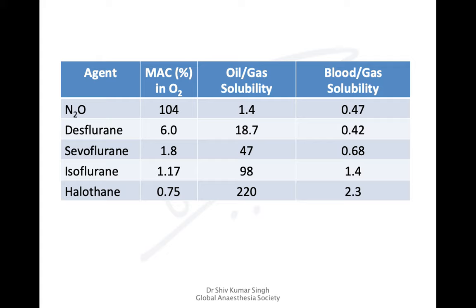For nitrous oxide, the oil-gas solubility is 1.4. It is less soluble because its blood-gas solubility is 0.47, and hence it equilibrates very quickly. Whereas halothane has a very high oil-gas solubility of 220, and hence it is taken up slowly. Its blood-gas solubility is 2.3, and because of its high oil-gas solubility, it remains in the fatty tissues and is slowly leached out, making recovery from halothane a little slower.